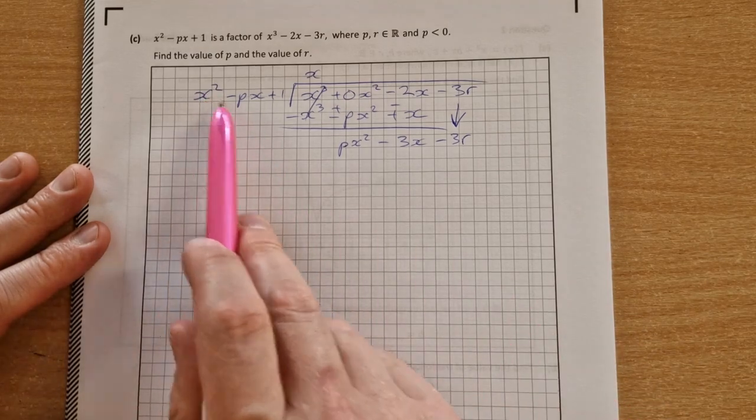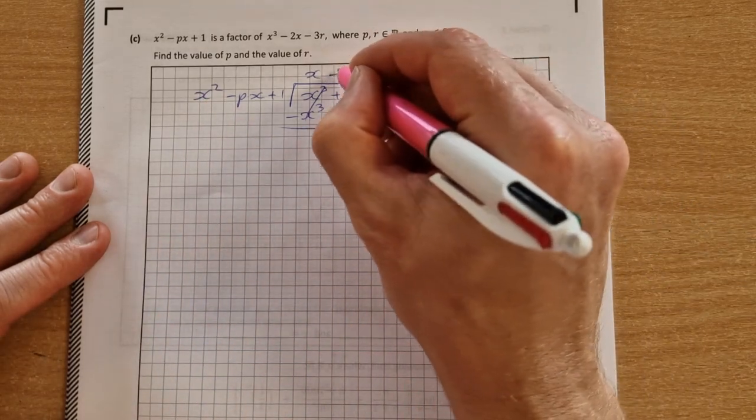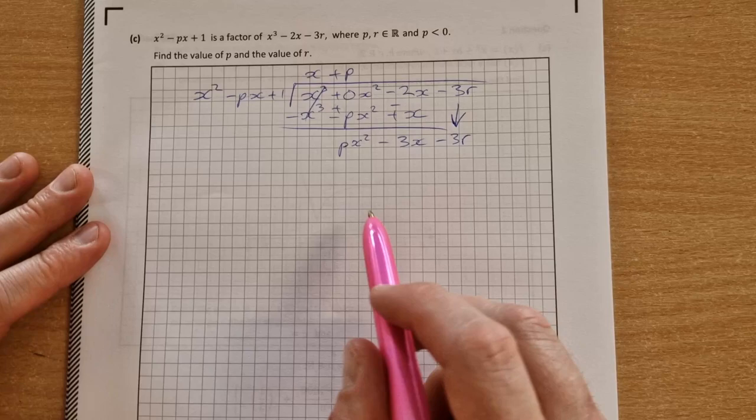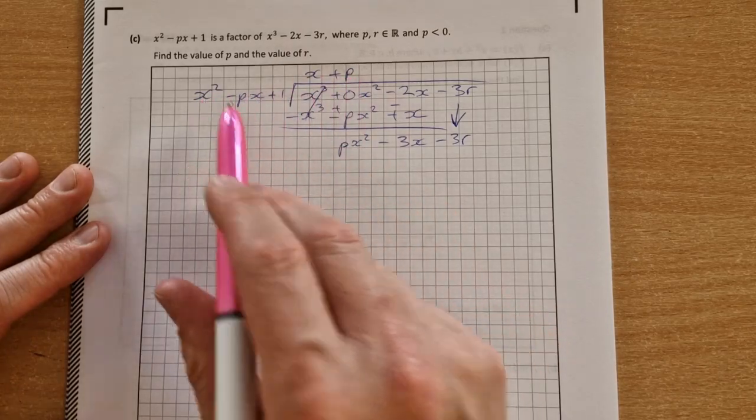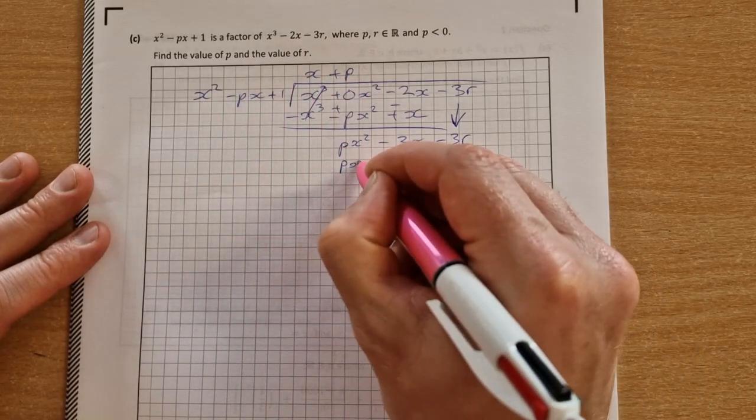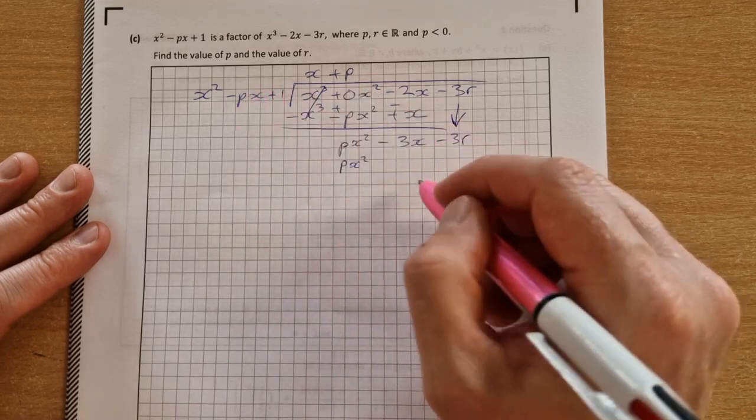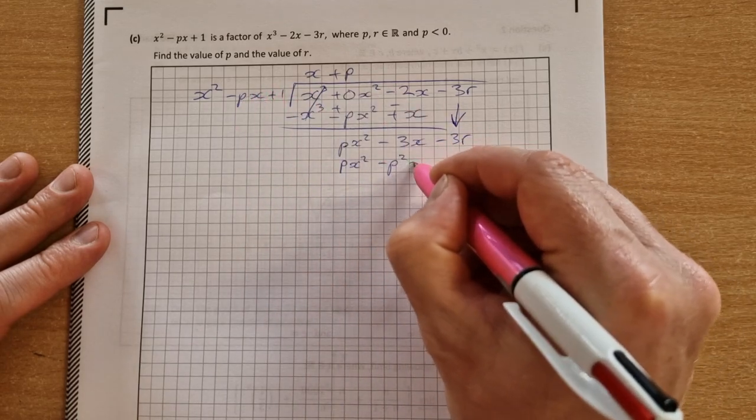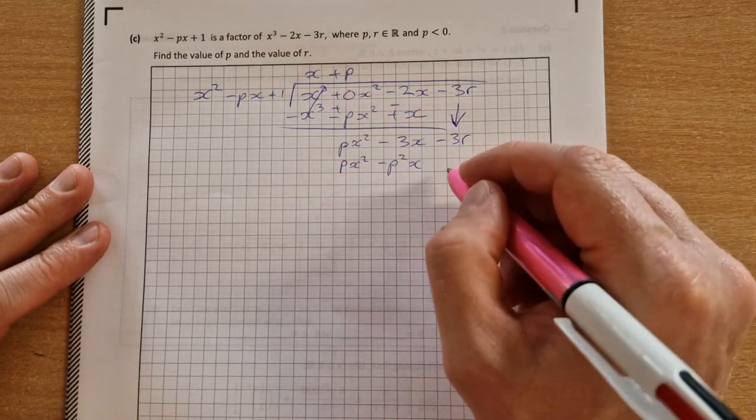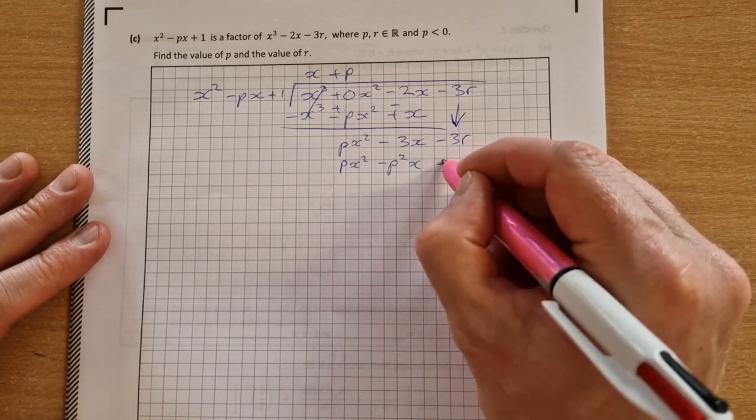And we start again. x squared into px squared goes p times, so it's plus p, multiply down, p by x squared is px squared, p by minus px is minus p squared x, and then p by plus 1 is plus p.